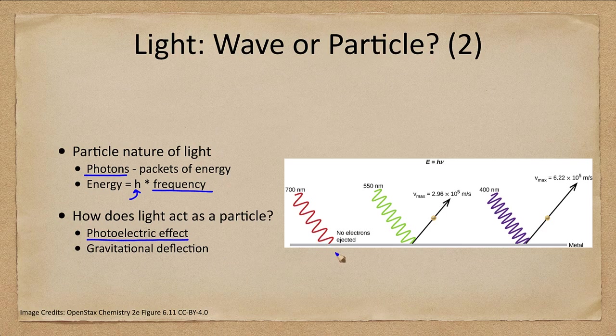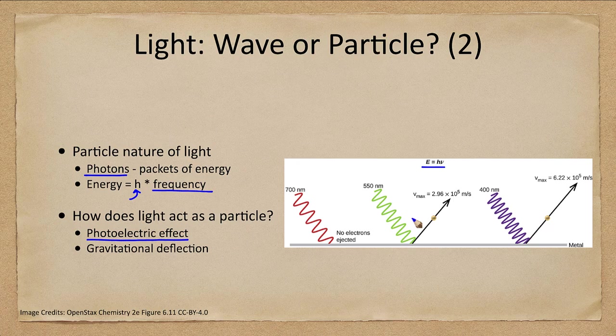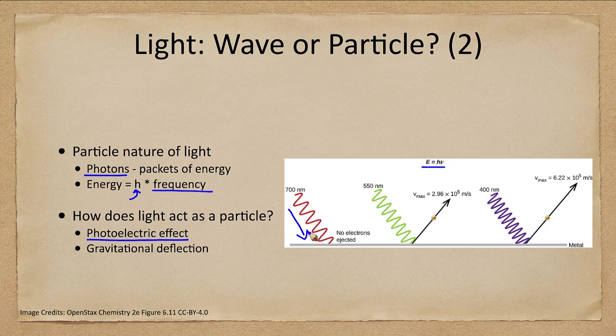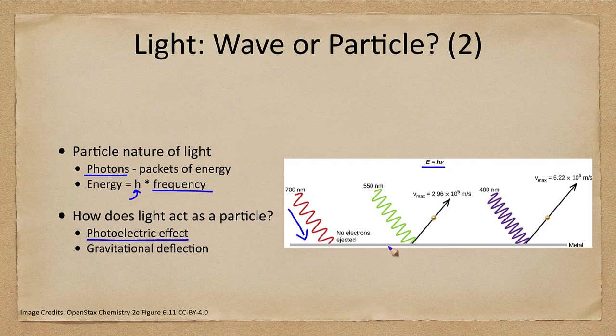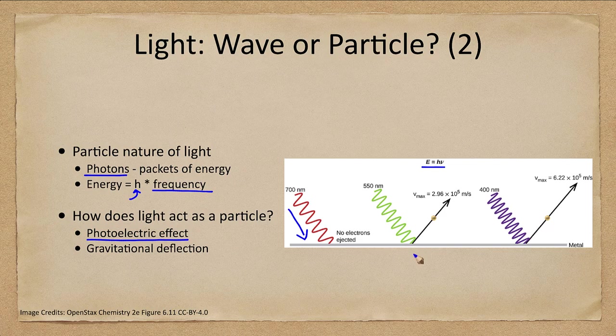in that if you need a certain amount of energy, you need that specific energy to eject an electron from a metal. So you can send all of the red light in here that you want and it will not eject any electrons. Once you hit that critical energy, you now have enough energy to remove that electron from the metal.